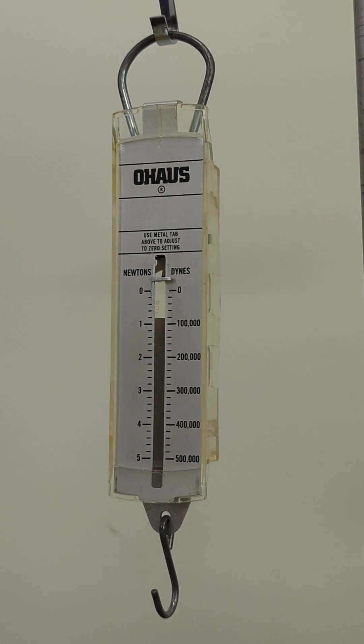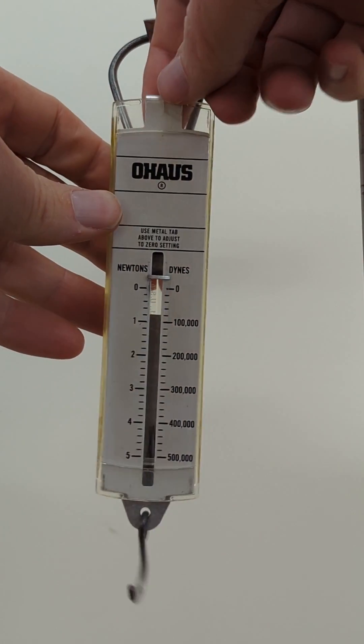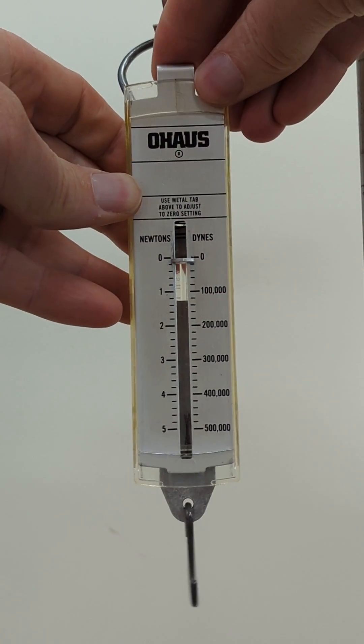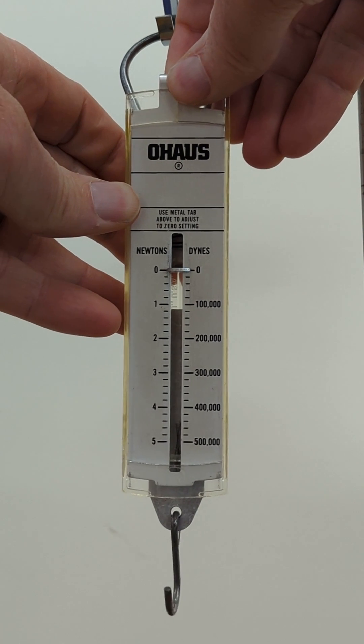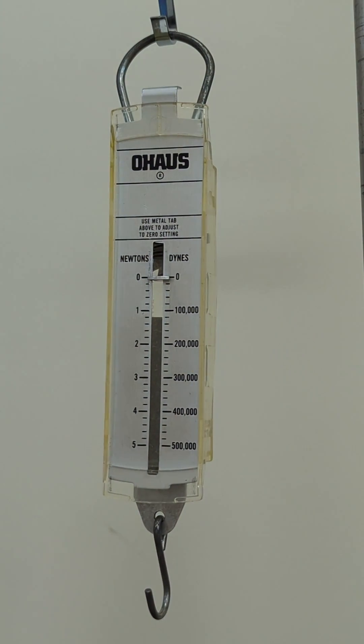This particular kind of spring scale is made so that this metal part can slide up and down to change the calibration. And so we just need to slide that until the bar is right at zero.